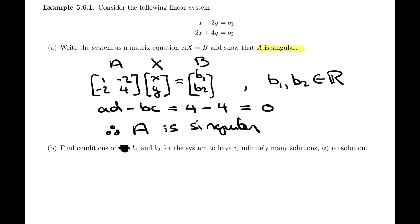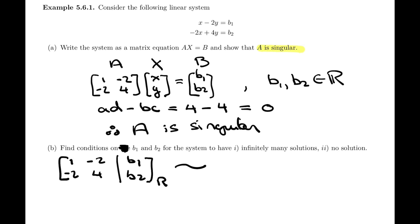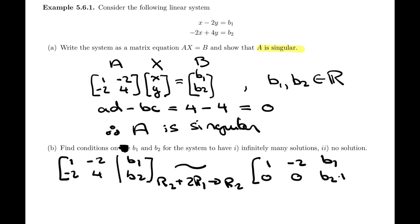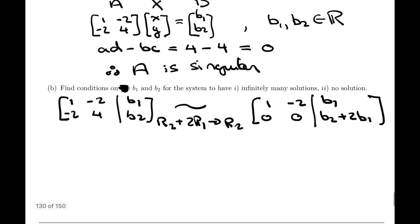To discuss the number of solutions, we work with the augmented matrix of the system — the coefficient matrix augmented with the column of constants. We need to bring this matrix as close as possible to REF to work with rank. Applying row operation rho 2 plus 2 rho 1 as the new rho 2 gives us: row 1 is 1, negative 2, b1, and row 2 becomes 0, 0, B2 plus 2B1. That's as far as we can go.